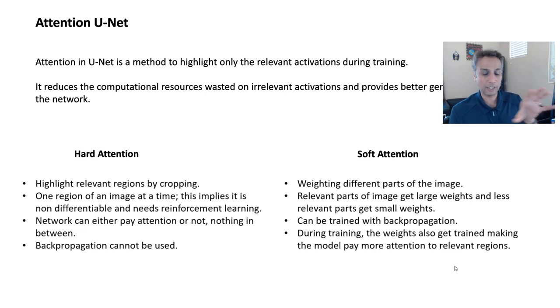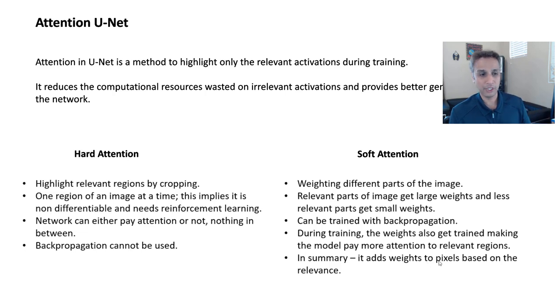And during this backpropagation, during our training, the weights that we are assigning also get trained, making the model pay more attention to relevant regions as the training goes by. Initially, it may not be, but eventually, as the training goes by, the weights get more and more focused in areas where you're trying to pay attention and not much in the other regions. That's all it comes down to. So if you would like me to summarize this, I would say it adds weights to pixels based on its relevance. That's pretty much it.